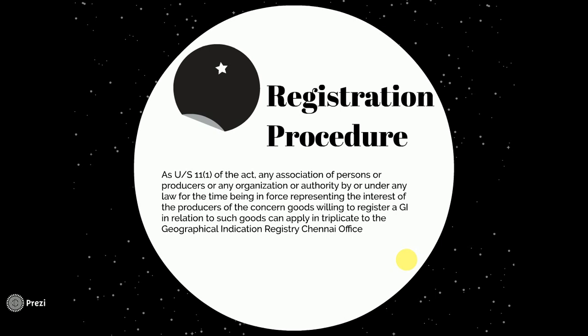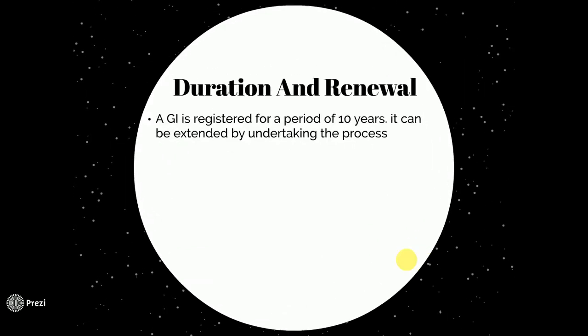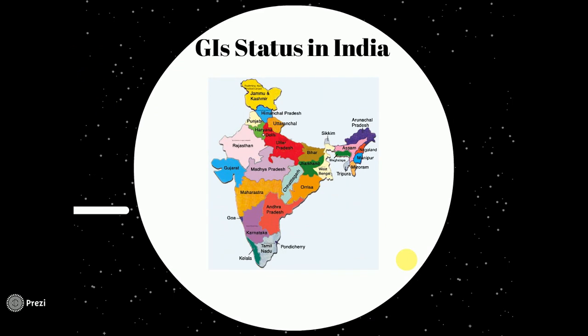The duration: a GI is registered for a period of 10 years and it can be extended by undertaking the renewal process. Now, this is the present GI status in India — I have chosen the whole map of India and I will be discussing which state has GIs for which particular product.